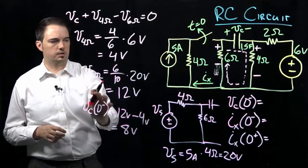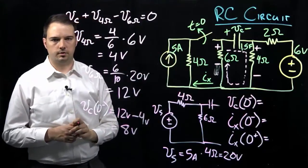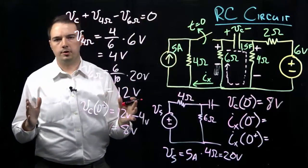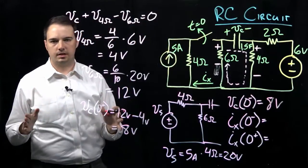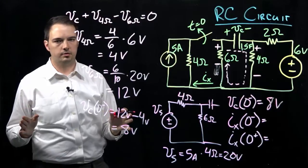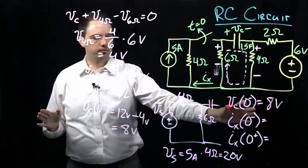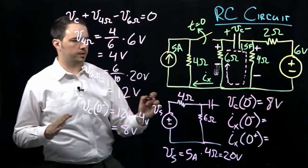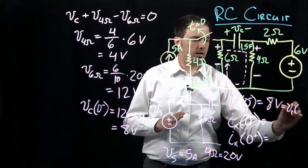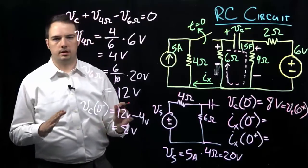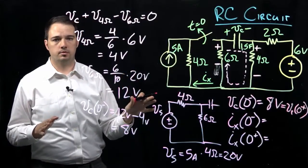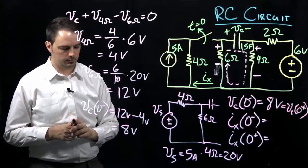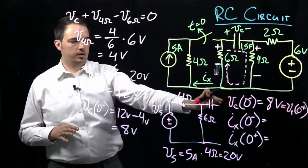So the initial voltage across the capacitor is 8 volts. Importantly, the voltage across a capacitor cannot instantaneously change as a function of any event in the circuit. So even though we defined this at time zero minus — immediately before opening the switch — we know it's equivalent to the voltage at time zero plus, immediately after throwing the switch. That voltage will still be 8 volts across the capacitor.